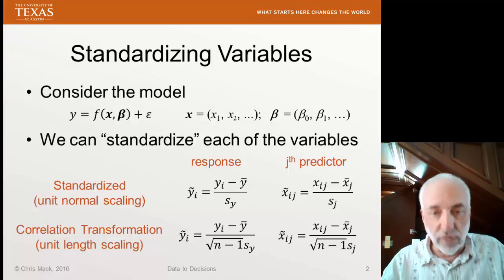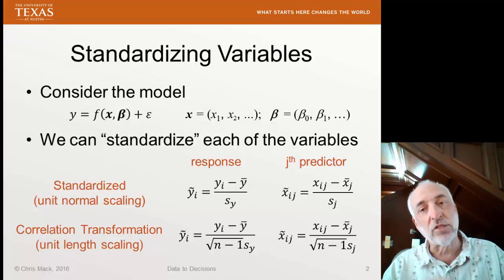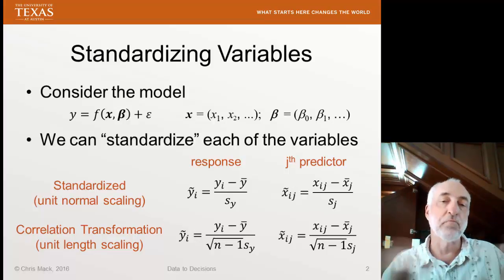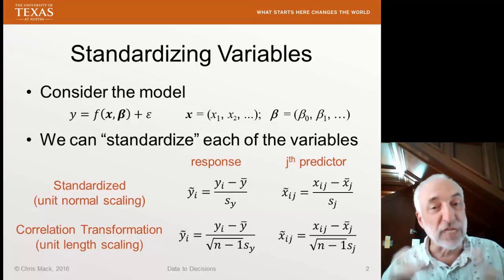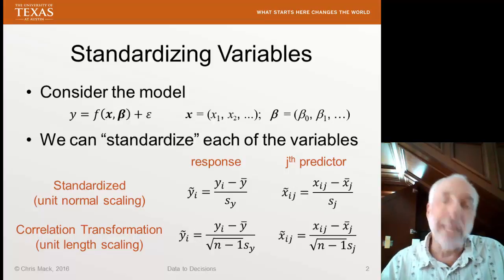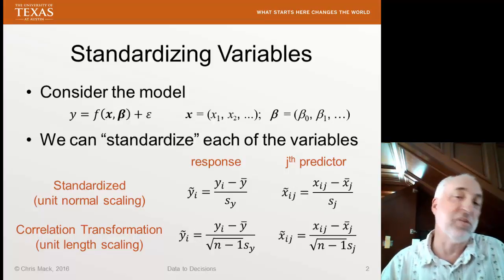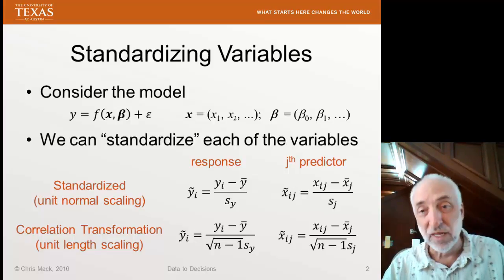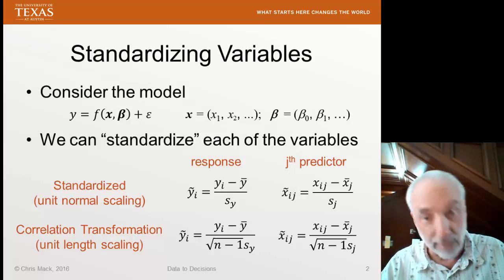Why would we do this? What is the good of it? Part of it has to do with making the magnitude of each of the variables about the same. Each of our variables are going to be plus or minus 1 or 2 or 3 once we've standardized in our unit normal scaling.